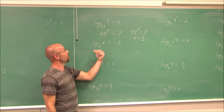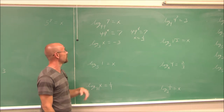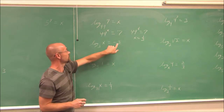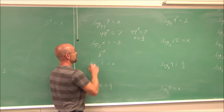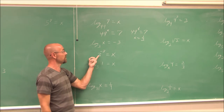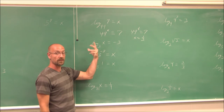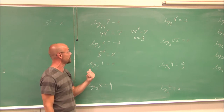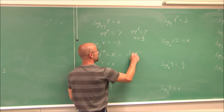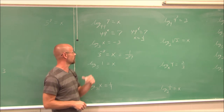For this example, I rewrite in exponential form to solve for x as the argument. The base is 3, so I write 3 to the negative 3 equals x. Then I simplify: a negative exponent means take the reciprocal, so I get 1 over 3 cubed. And 3 cubed is 27, so x equals 1/27.